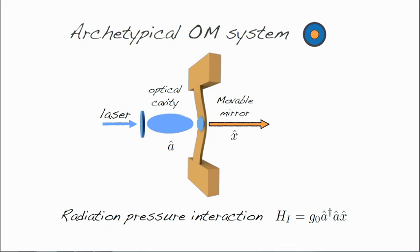We note that the optomechanical interaction, while very weak at the level of a single photon, is non-linear and thus can be enhanced and tuned by the laser light. That's why optomechanical systems are so versatile and can be deployed for a wide range of tasks, including precise sensing, quantum information processing, and tests of quantum behavior at large scale.